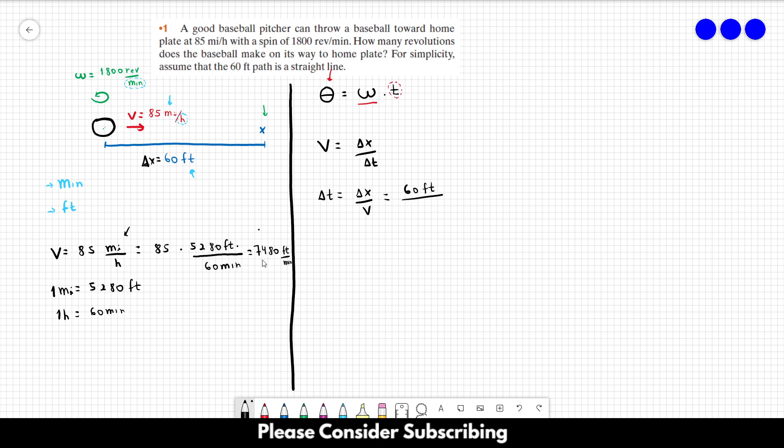And v is equal to this value over here, 7,480 feet per minute. It is important for you to write the units here so you don't get lost. So you can see that you can cross out this over here. And as an answer, you will have 0.00802 minutes. So you don't get lost with the units if you keep writing them. Okay. So that's t.